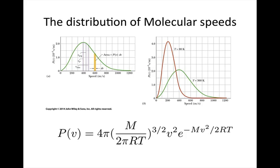It's worth noting that we've been looking at the average speed of gas particles, but there's a whole range of speeds. Maxwell derived the molar speed distribution equation, giving the probability of a particle having a particular speed v. Plotting it gives a curve with a minimum speed but no real maximum — a long tail. The root mean squared velocity, average velocity, and most probable velocity are all slightly different, and the distribution shifts to higher speeds as temperature increases.